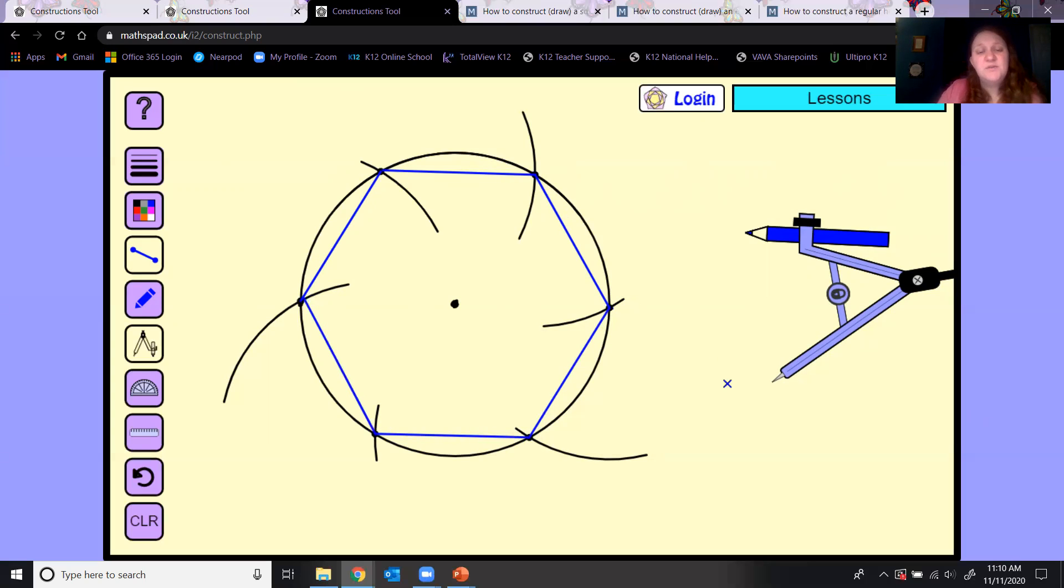It's also another way that you could do an equilateral triangle, because technically I could skip every other point and I have an equilateral triangle there also. But we were really just talking about hexagon here. So that was constructions.